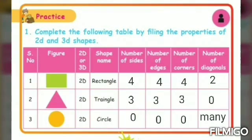Circle is also a 2D shape. It has 0 sides, 0 edges, 0 corners and many diagonals.